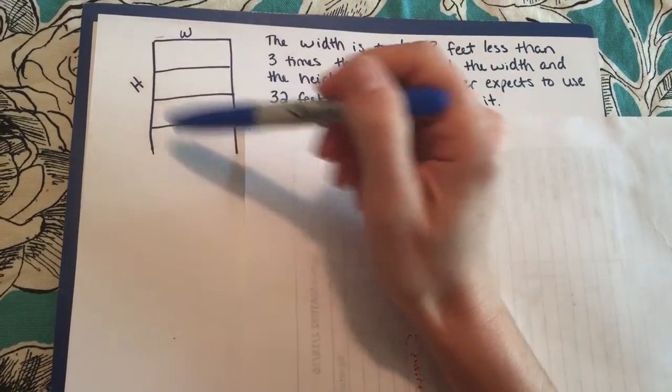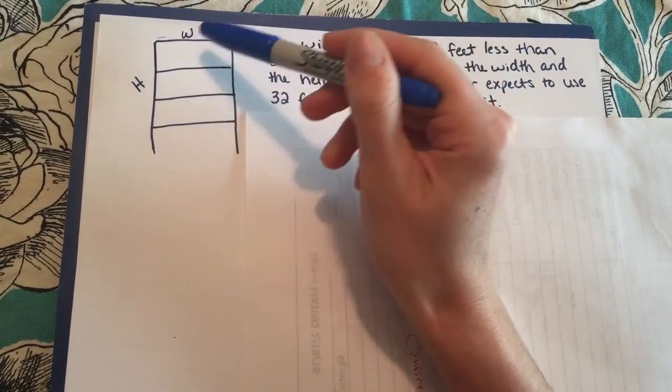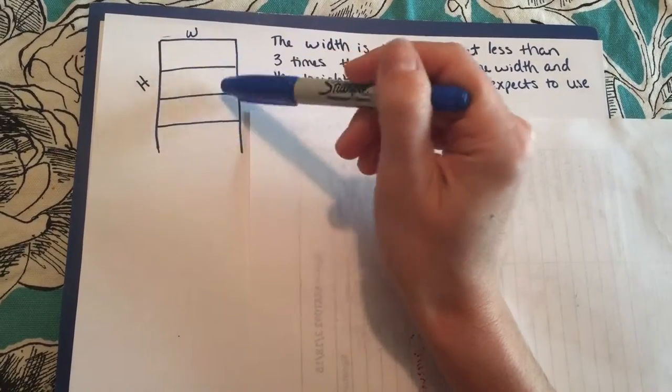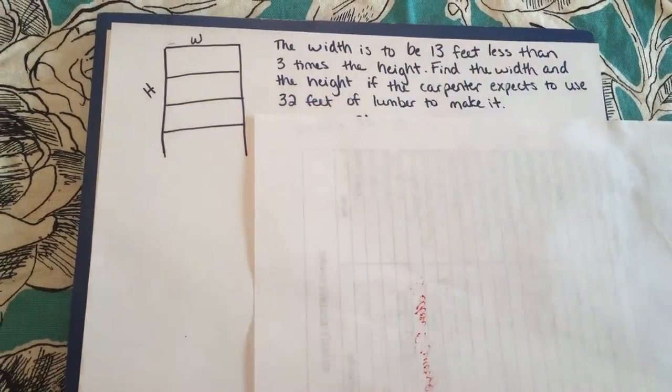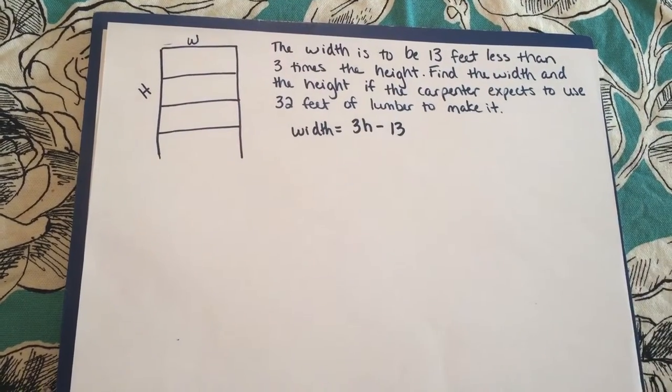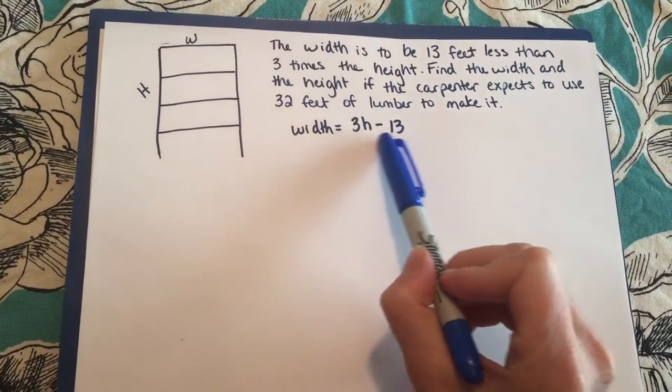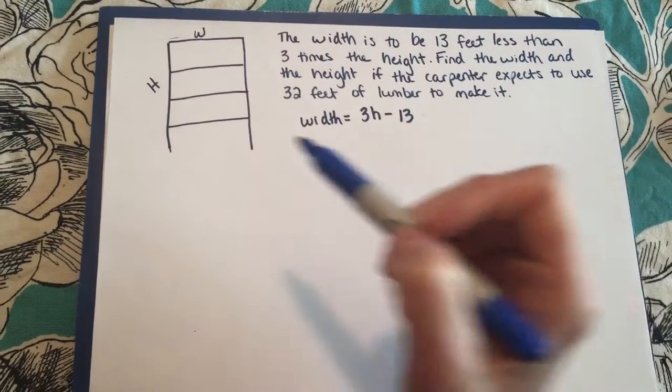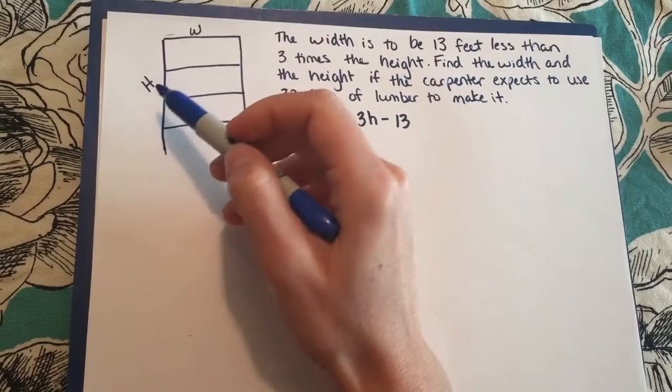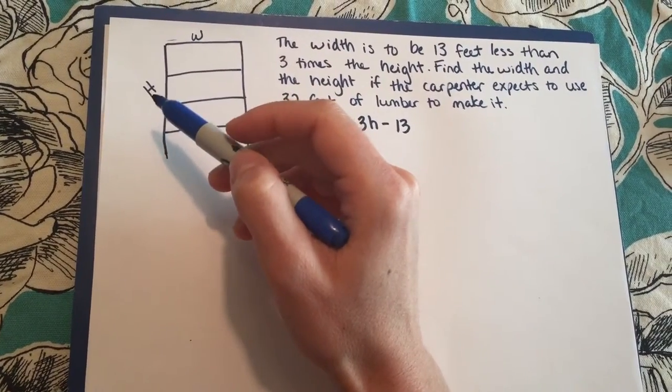You can see right away, here's our picture here. I have the height and the width and I know that I have 4 widths here that I'm going to need to make and 2 different heights. So it tells us that the width is 13 feet less than 3 times the height and they don't give us any details about the height so we're just going to assume that that's going to be h.